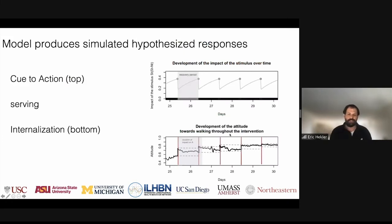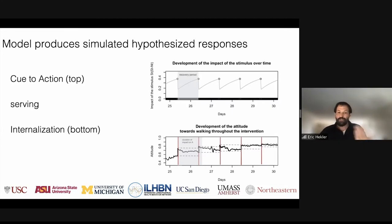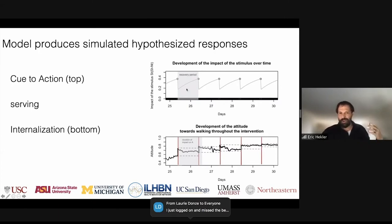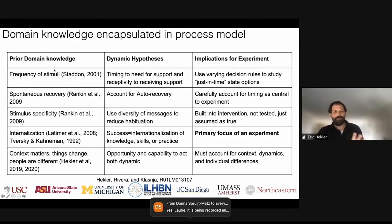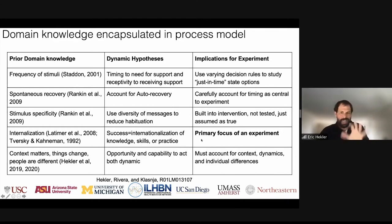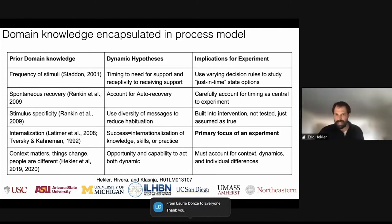When you start building process models, you can run simulations — basically a sanity check. This isn't telling us the model is true; it's telling us the math is doing what we hope. When we run simulations where we send cues to action in a simulation environment, we get a simulated auto-recovery response. And if we get the timing just right, we actually start to build an internalized sense of growth towards walking. There's quite a bit of domain knowledge encapsulated in this process model, and importantly, the process model is not forcing us to simplify our experimentation — it's allowing us to engage with the level of complexity.